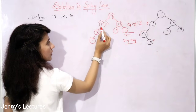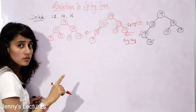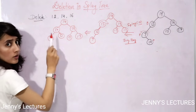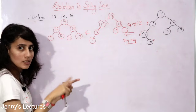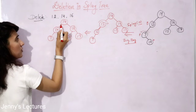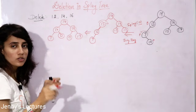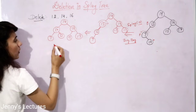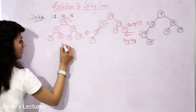After rotating right on the grandparent, 10 is still not the root, so splaying continues. Now 10 is the left child of 14, and 14 is the root — so there is no grandparent. This is a zig situation. Since 10 is the left child of 14, we apply a right rotation on the root (parent of 10).